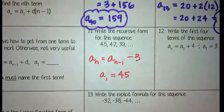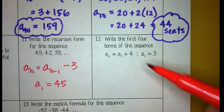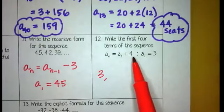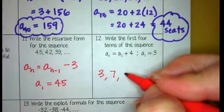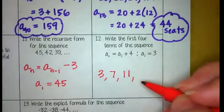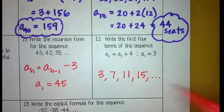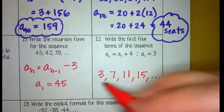This example is asking us to kind of go the opposite. So we're being asked for the first four terms of the sequence. Well, first of all, right here we're given the first term. So we know that the first term is 3. Then we look here and we can see that all we need to do is add 4. So if we add 4 to this, we would get 7. If we add 4, that would be 11. If we add 4, that would be 15. So those are your first four terms of the sequence.